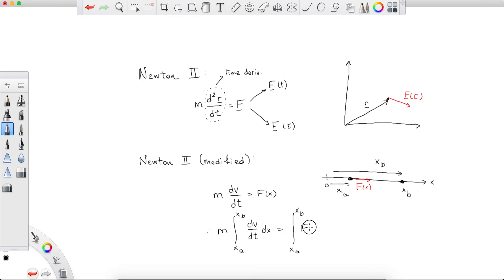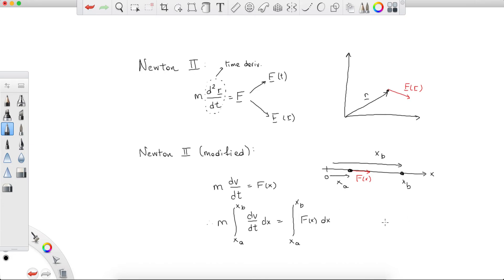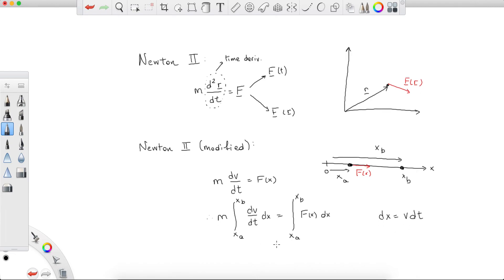So f of x dx. What now? Maybe remember, hopefully remember from kinematics, that dx is none other than v dt. Distance covered by a particle in an infinitesimal time interval is equal to the velocity of the particle, the instantaneous velocity of the particle, multiplied by that time interval, because if this time interval is small enough, infinitesimally small, the velocity is constant.